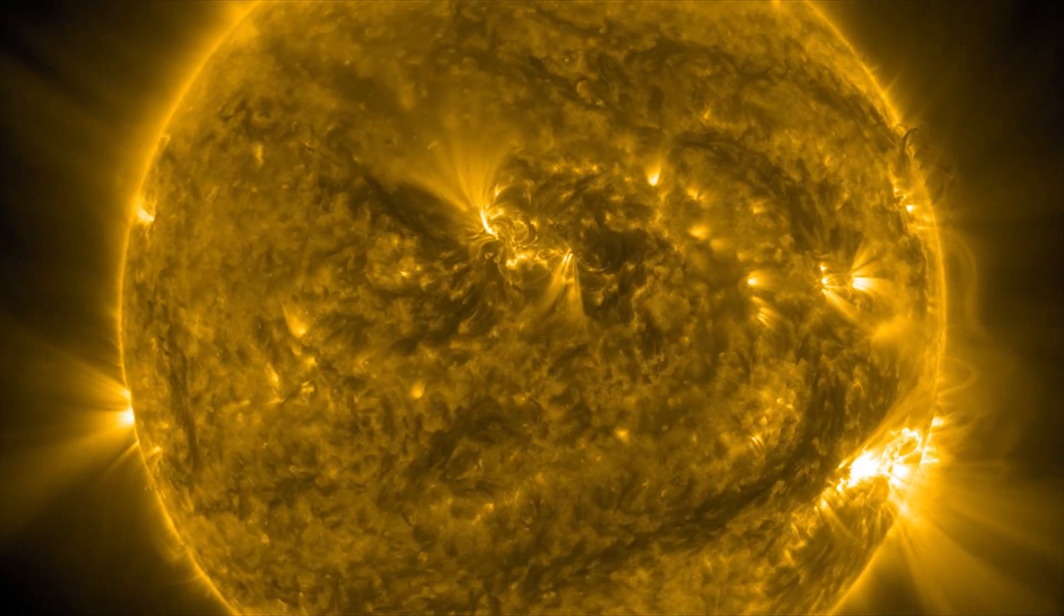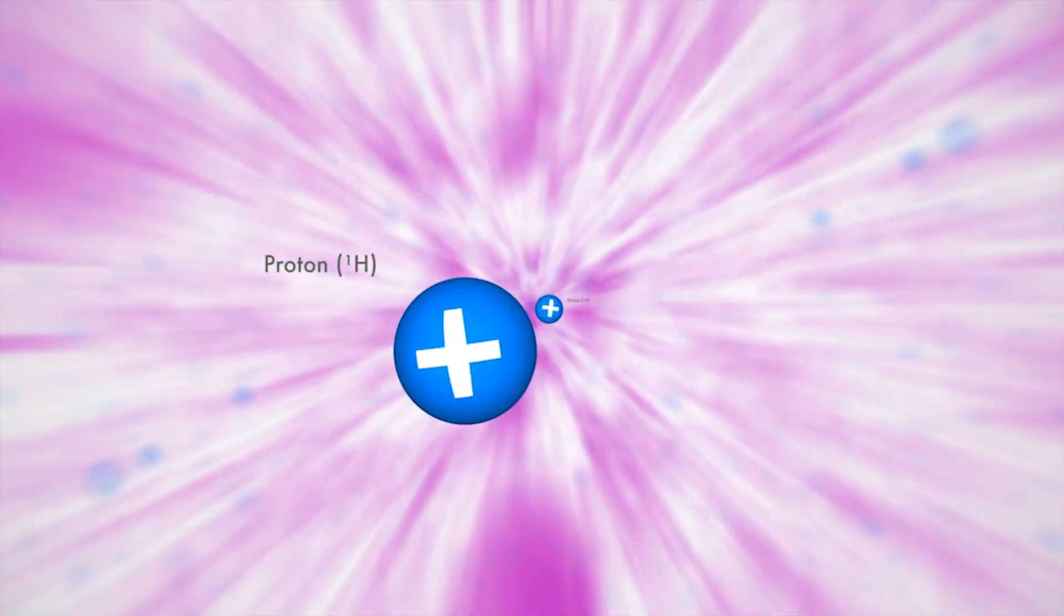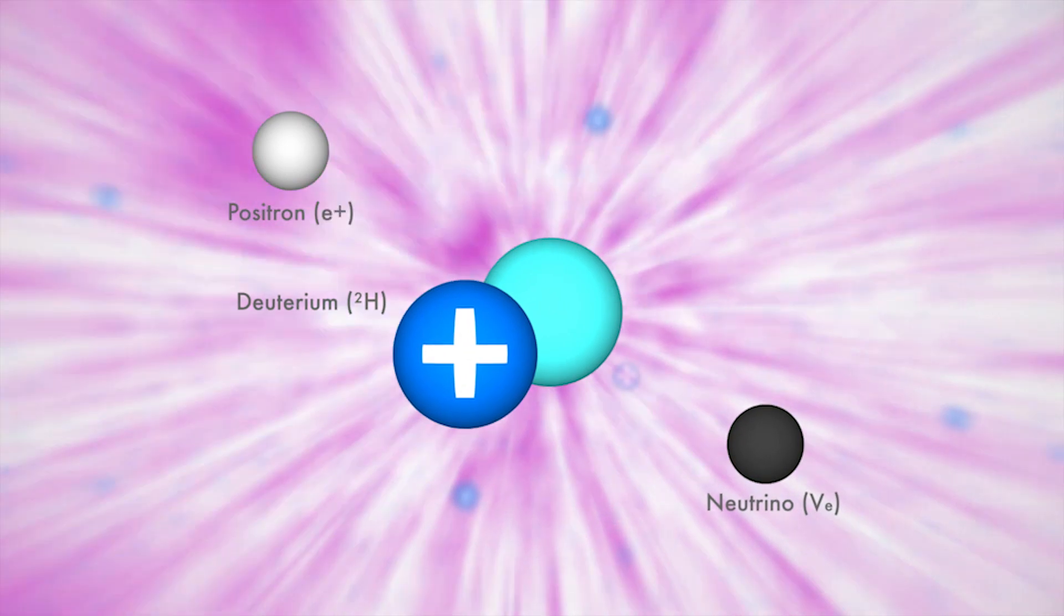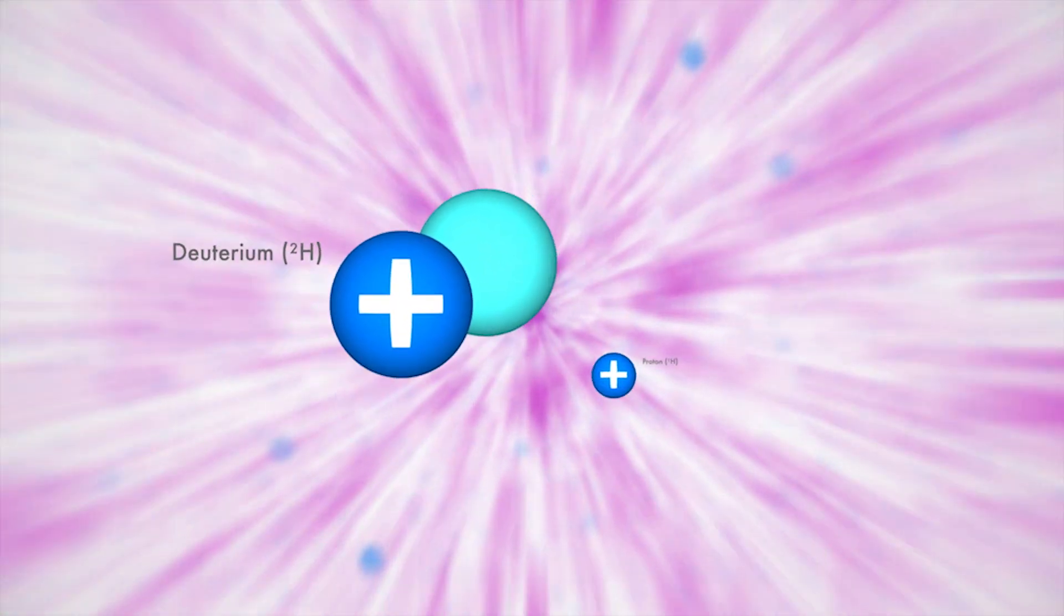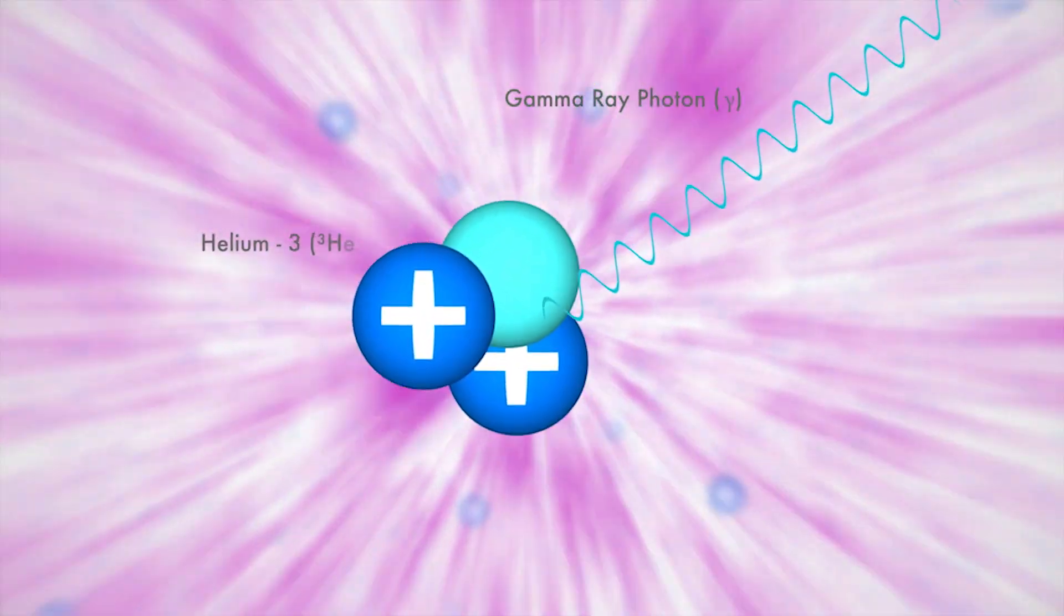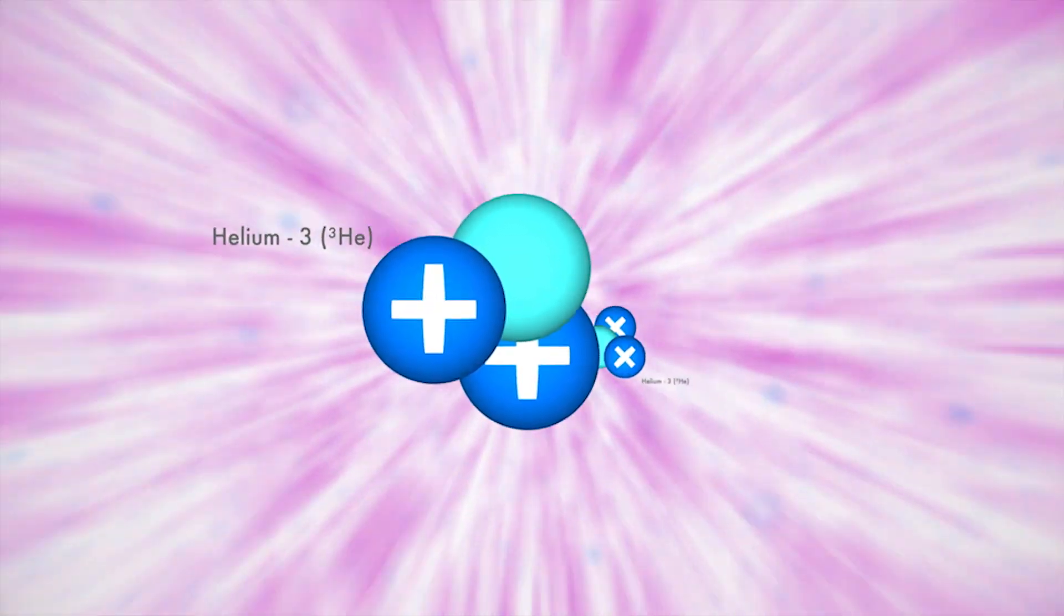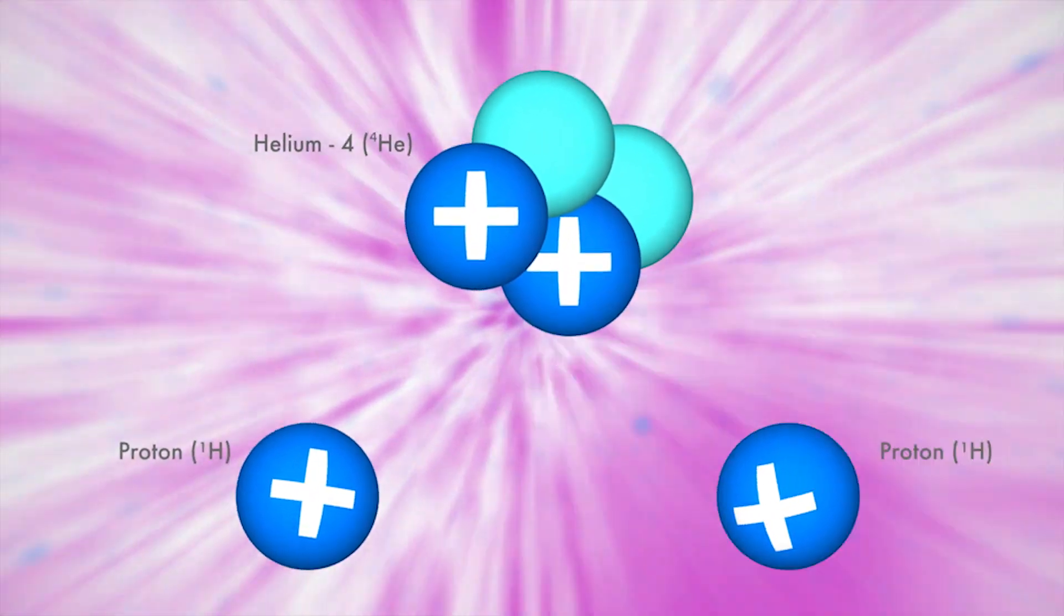15 million degrees is the temperature at which fusion happens in the Sun. Hydrogen comes together to form helium. It does this in a multi-stage process. First two protons fuse to form deuterium, and then another proton is added to form helium-3. Then two helium-3 nuclei join to form helium-4 and leave two protons. However, this process happens really slowly.